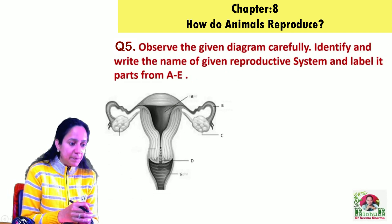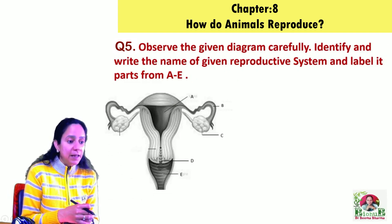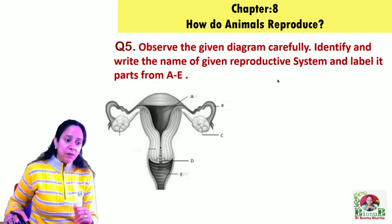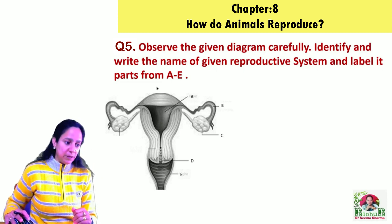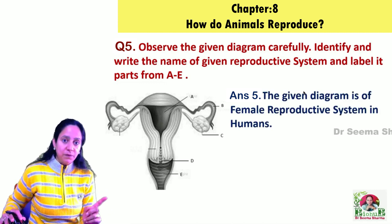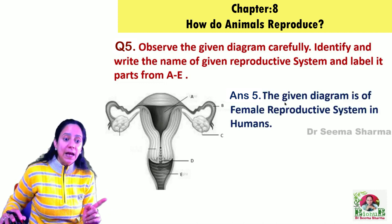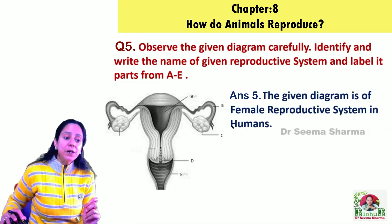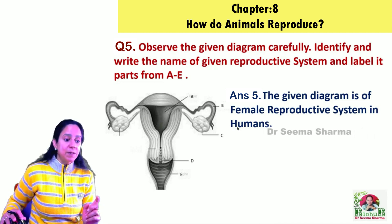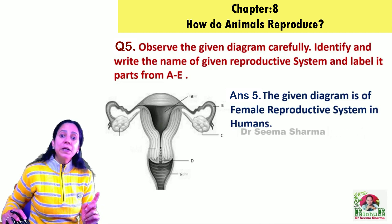Now I'm taking the diagram-based question from this worksheet. The question is: observe the given diagram carefully, identify and write the name of the given reproductive system, and label its parts from A to E. The answer to the first part is: the given diagram is of the female reproductive system in humans.